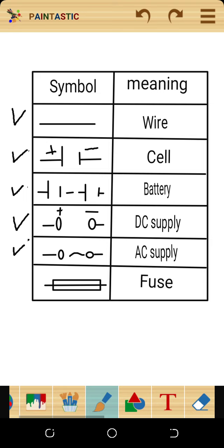The fifth symbol represents AC supply. AC stands for alternating current, and in an alternating current supply, current flows in different directions.